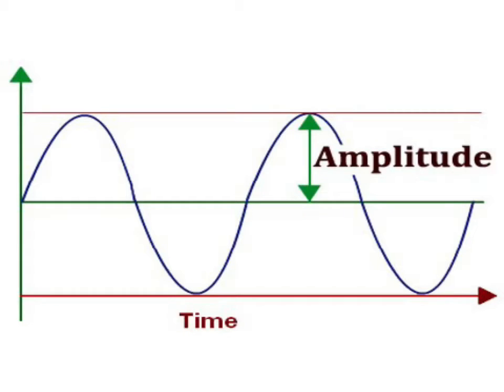For example, when a sitar string is plucked lightly, then it vibrates with a small amplitude and produces a faint sound. On the other hand, when a sitar string is plucked hard, then it vibrates with a large amplitude and produces a very loud sound.